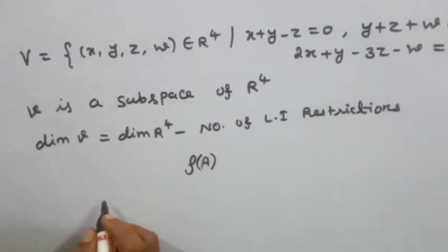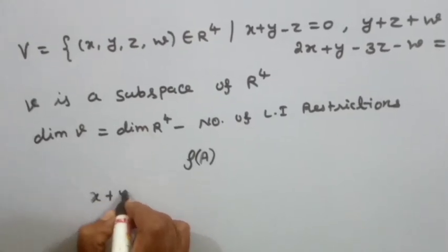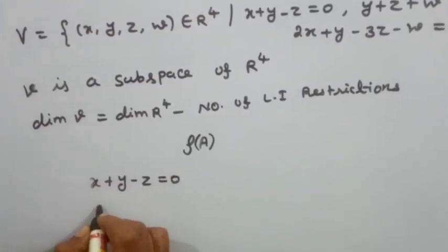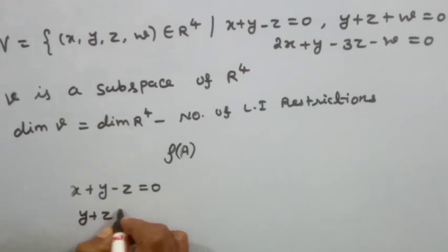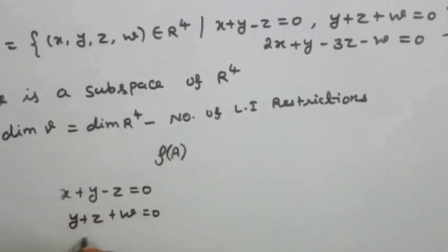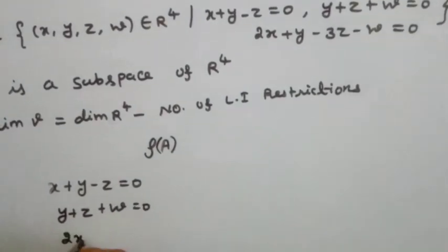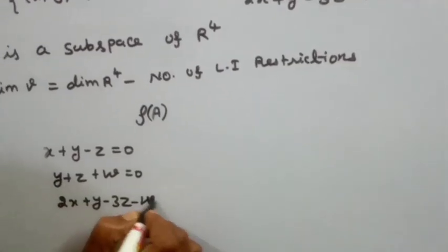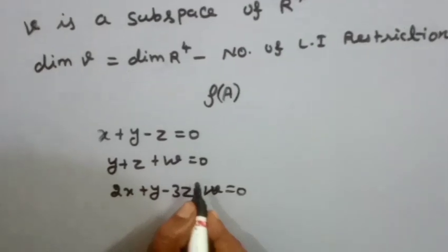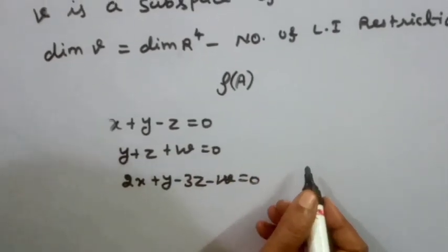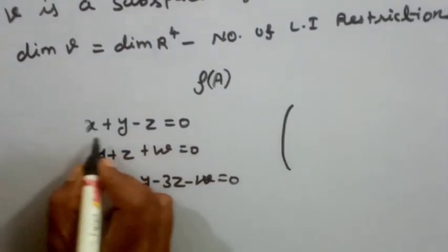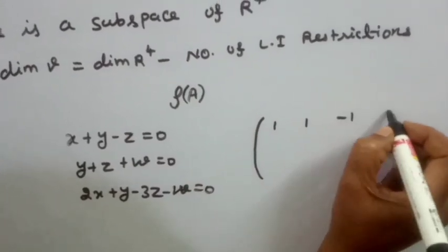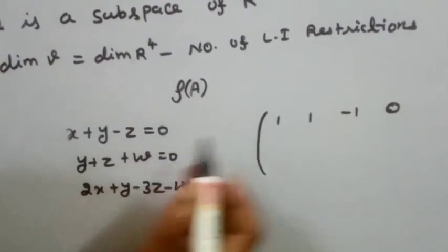We write the coefficient matrix A from the three conditions. First equation x + y - z = 0 gives row (1, 1, -1, 0). The variables correspond to x, y, z, w.